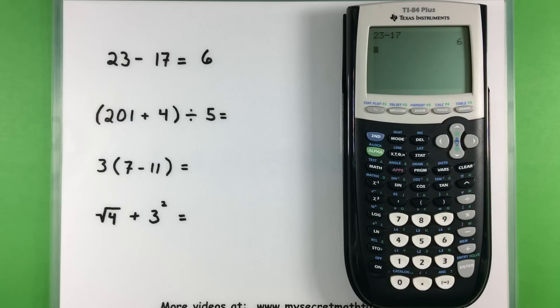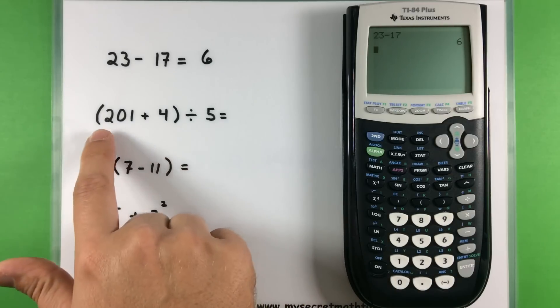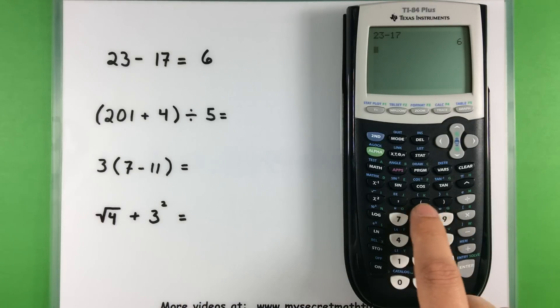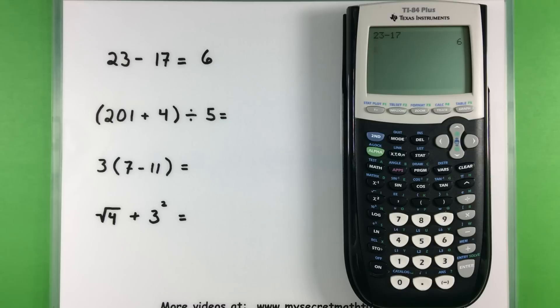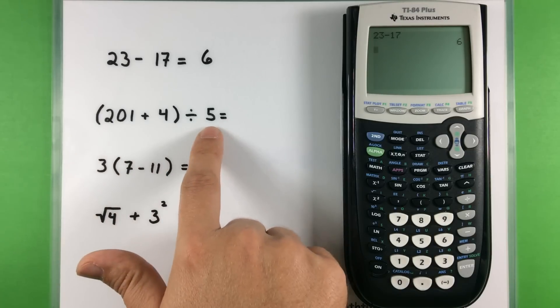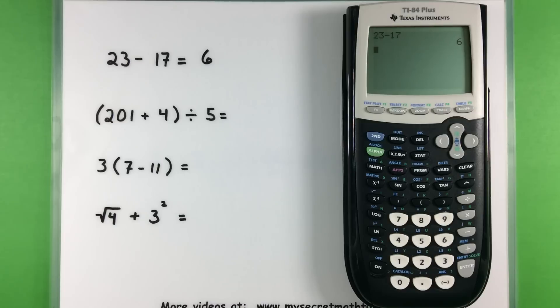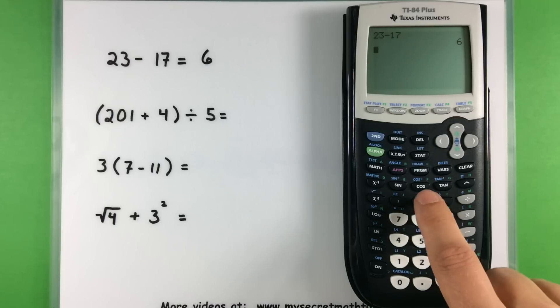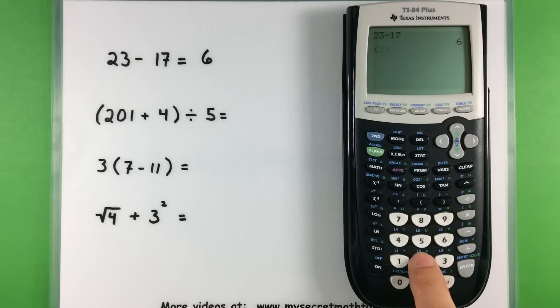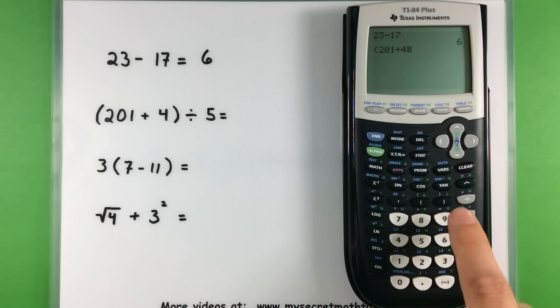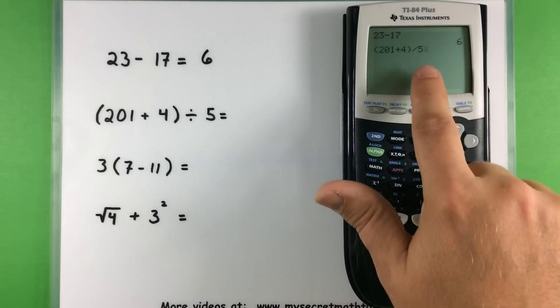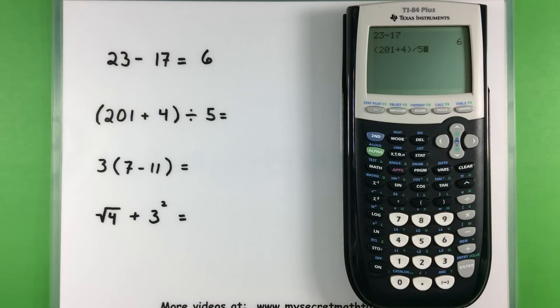Now if I have a slightly more complicated problem, maybe one that involves parentheses, you'll also find buttons for those. Those happen to be right above my 8 and 9. So I can even put those in. I'll put it in exactly as I see it here. And I'll press the enter button again when I want to get to that equal sign and actually have it run through the computations. So open parentheses, 2, 0, 1, plus 4, close parentheses, and divide by 5. Now you'll notice that when it gets to the division part, I actually put a little slash mark rather than a division symbol. That's okay, it means the same thing, but just be aware of it. Alright, let's go ahead and press enter. And it gives us an answer of 41.